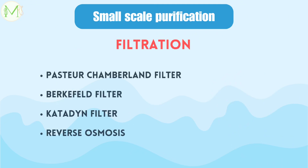The other method to purify water on a small scale is by filtration. The filters used are ceramic filters such as the Pasteur-Chamberlain filter, Beckefeld filter, and Catadine filter, which are effective in purifying water. Another effective way of purifying water through filtration is reverse osmosis. The water is made chemically and microbiologically portable by reducing the total dissolved solids, hardness, heavy metals, and disease-causing bacteria, viruses, protozoa, and cysts.